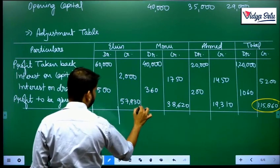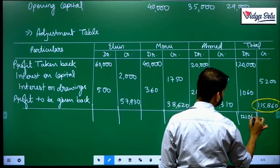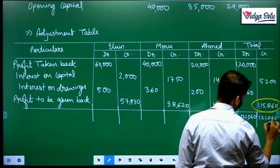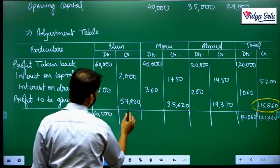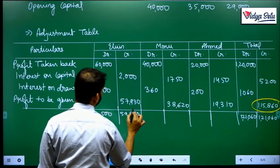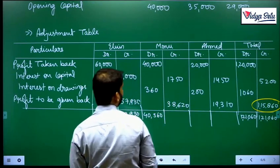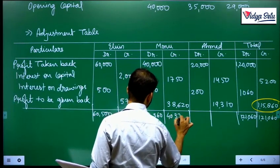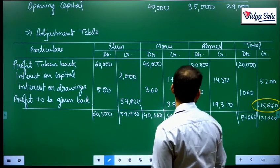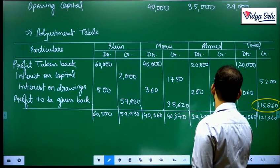Once this is done, we just have to find out the totals. Obviously the total on this side will be equal, 1,21,060. Now let us see who is more, who is less. 60,500 and this is 59,930. 40,360, this is 39,620 plus 1,750 is 41,370. This is 2,200, this is 1,920. 20,760.